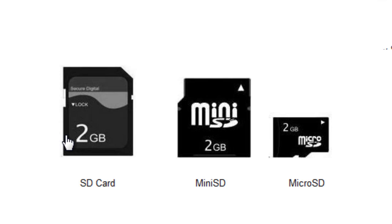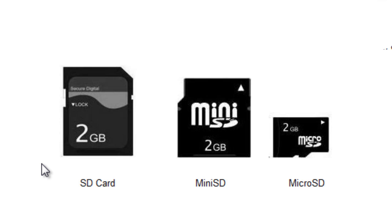A memory card, also called a flash memory card, is a solid state electronic data storage device used for storing digital information. These memory cards are commonly used in many electronic devices, including digital cameras, mobile phones, laptops, computers, MP3 players, and so on. They are small, rewritable, and are able to retain data without power. This ability to retain data and to rewrite many times is the key for flash memory card applications.